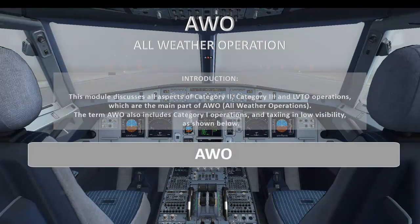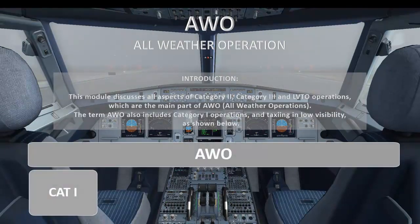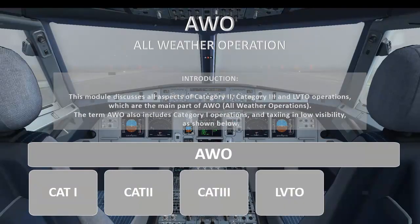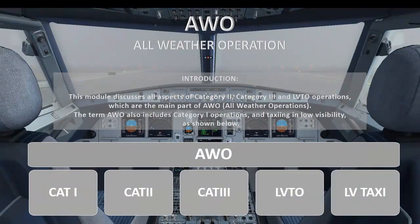This module discusses all aspects of Category 2, Category 3, and low visibility takeoff operations, which are the main part of all-weather operations. The term all-weather operations also includes Category 1 operations and taxiing in low visibility, as shown below.